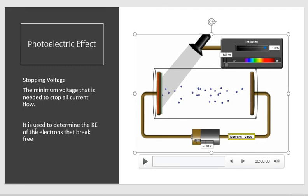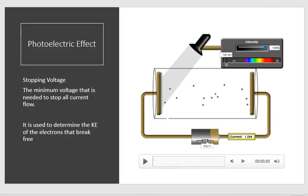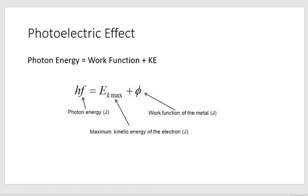Two things happen when a photon hits an electron: it breaks it free, and it gives it kinetic energy. This brings us to our equation for the photoelectric effect: photon energy equals the work function plus the kinetic energy. In the next lesson, we'll do examples — looking at how we use the stopping voltage to determine kinetic energy, how we determine the work function, and so on. We'll work our way through this equation.